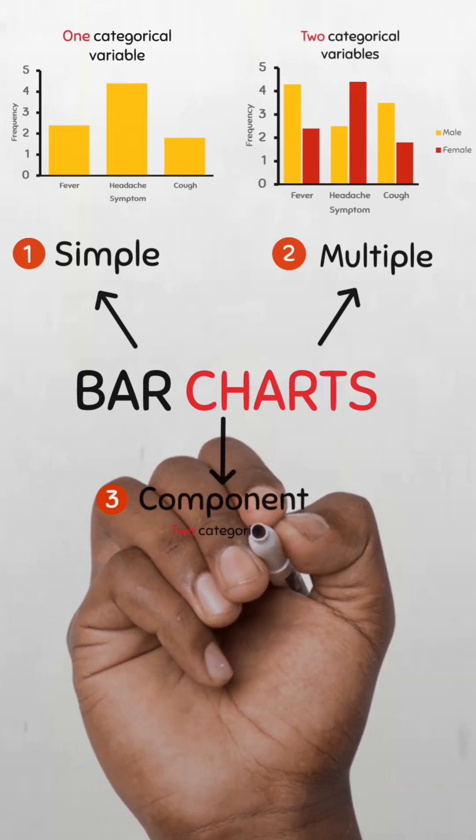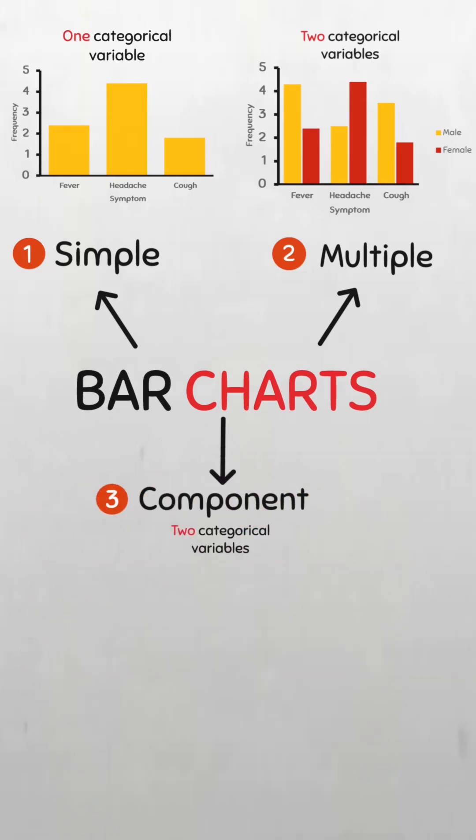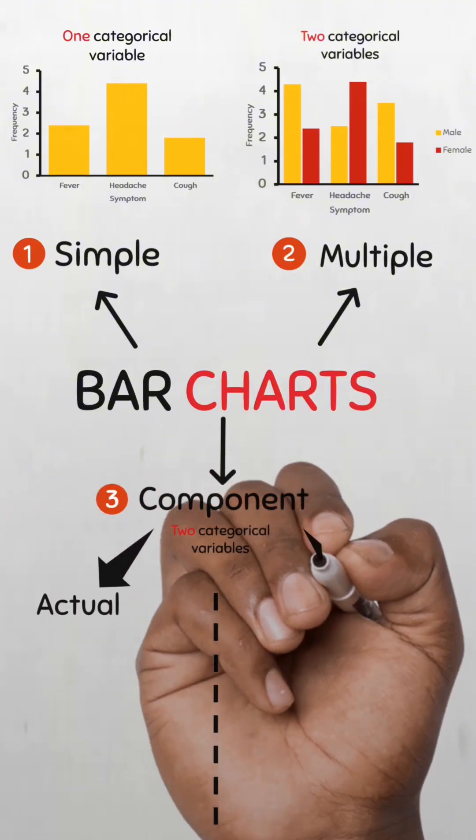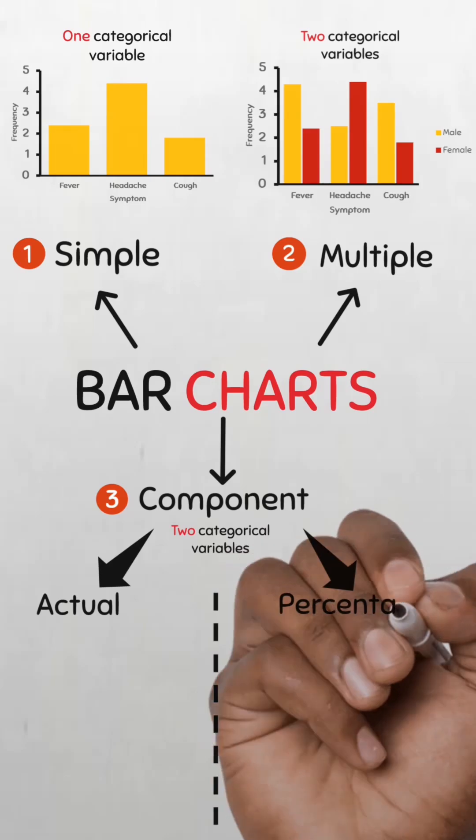This is also used to represent two categorical variables. There are two types of component bar charts. The first is called the actual component bar chart and the second is the percentage component bar chart.